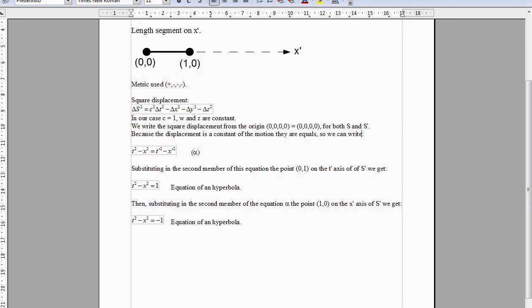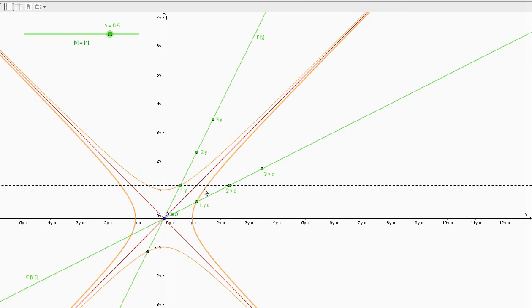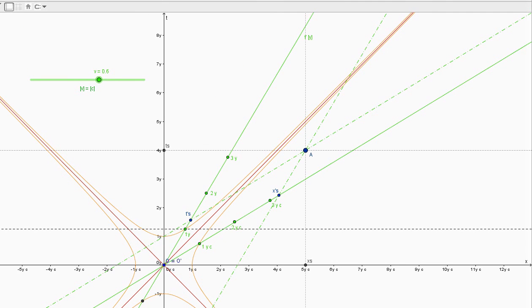In the same way, substituting the point 1, 0 into the second member of this equation, we obtain the equation of another hyperbola. Now, this is the extreme of the unit length segment that, repeated linearly along the x' axis, generates the scale of the x' axis. This has completed the construction of the Minkowski space.